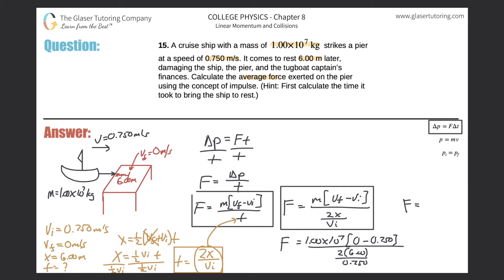Take out the handy-dandy calculator, and let's do this. I'm going to do the denominator first, 2 times 6 divided by 0.75, that's 16, and now do 1 times 10 to the 7th, multiplied by negative 0.75, and divide that by the 16. We get a negative value. Negative 4.69 times 10 raised to the 5, and that's in terms of Newtons. So that's the force. It should make sense. It should be negative.